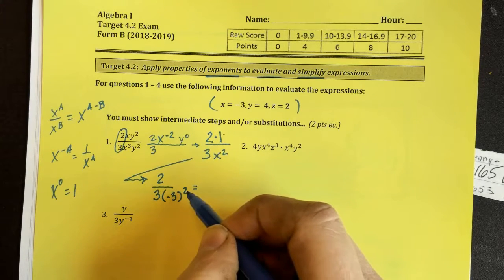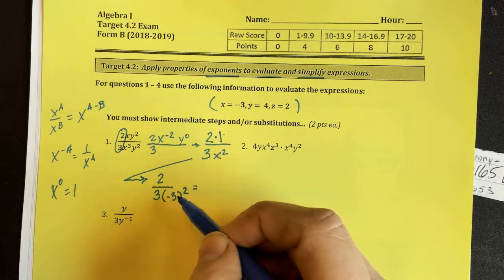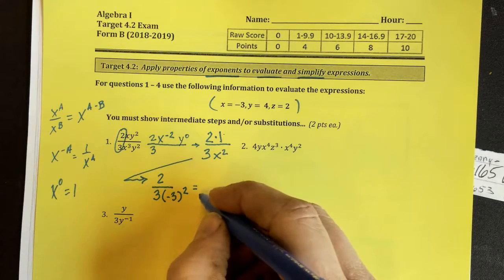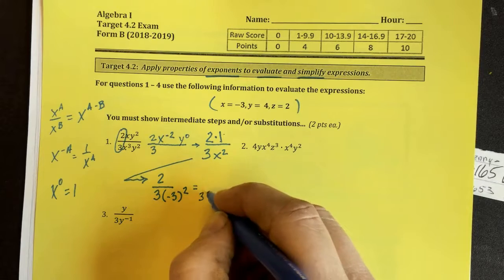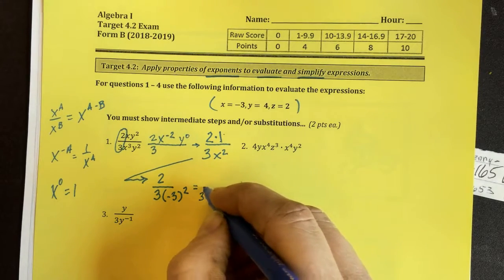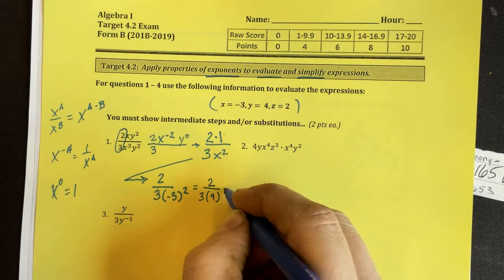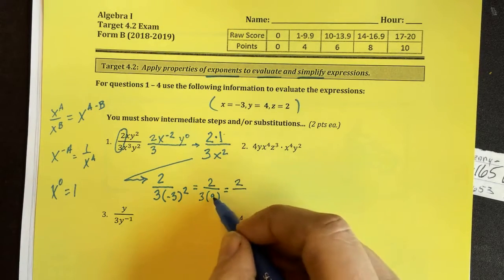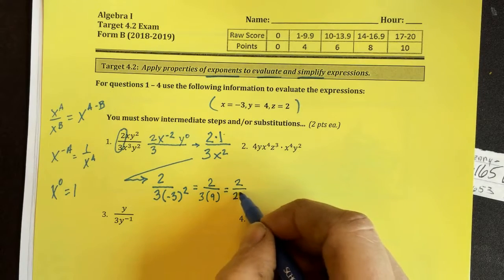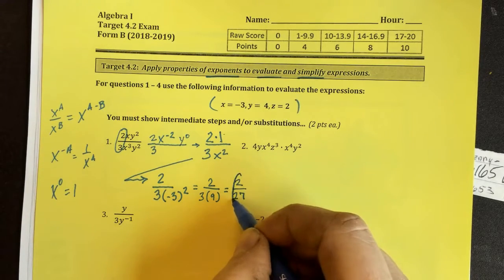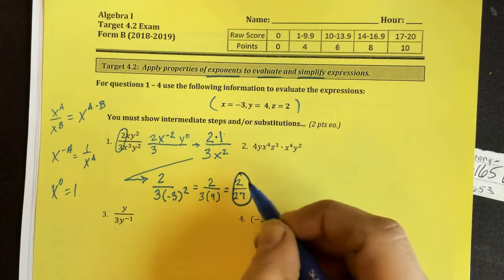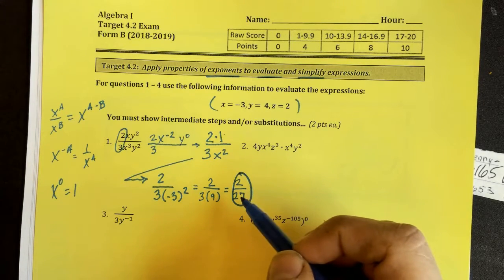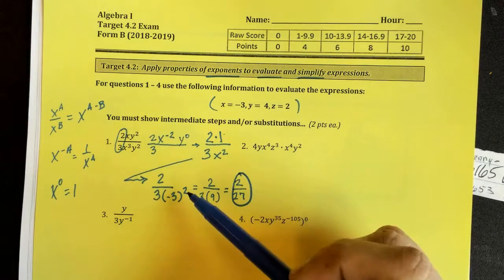Negative 3 squared. That's negative 3 times negative 3. That makes 9. So I have 3 times 9 over 2. The next step, 3 times 9 is 27. And there's my final answer. 2 over 27.